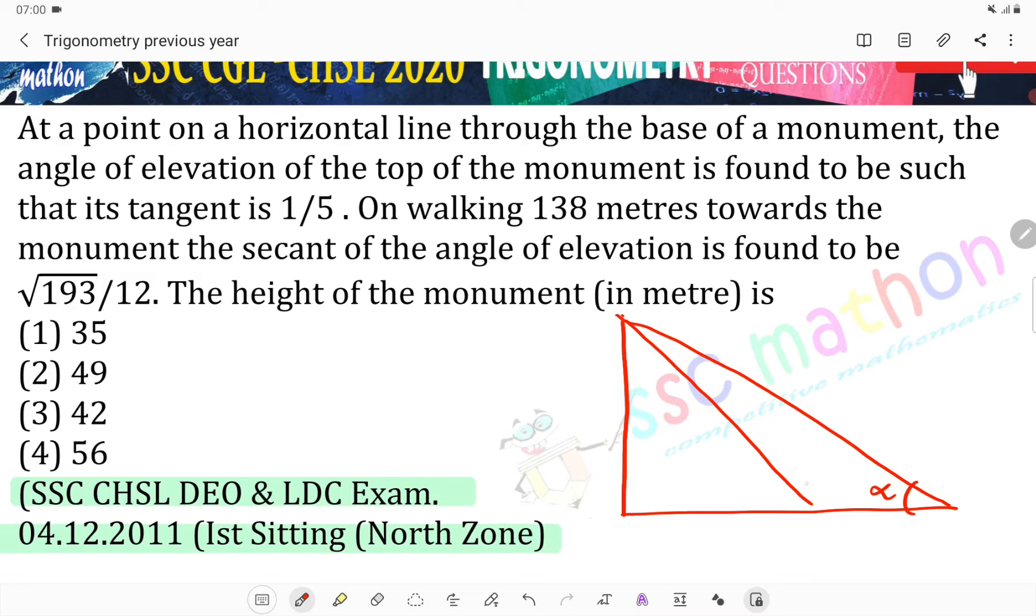We take alpha and theta. So tan(α) equals 1/5, and sec(θ) equals √193/12.